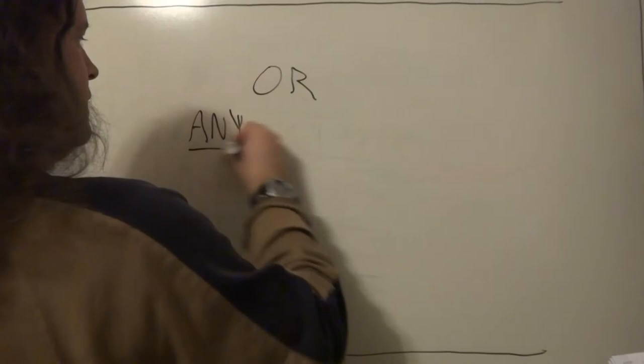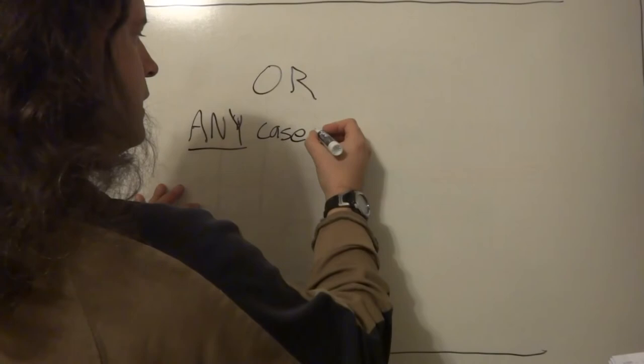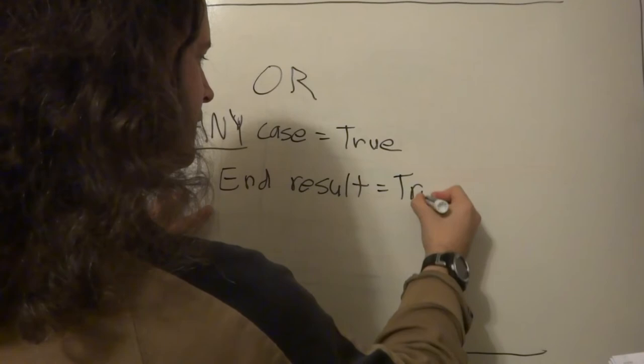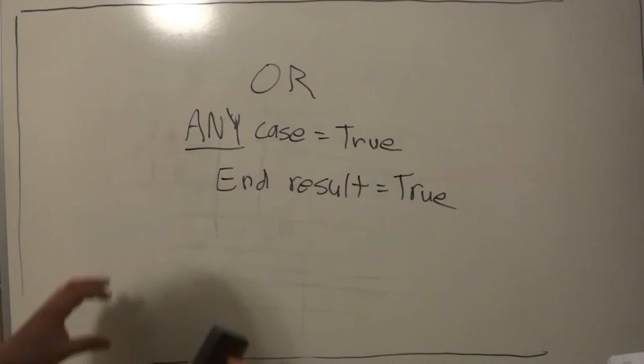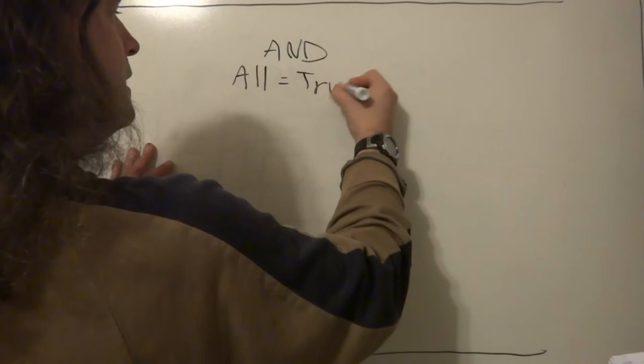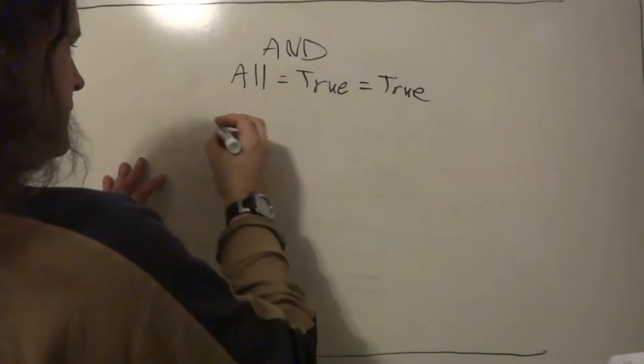It's on the land of war. Any case being true and result is true. Now, this is the exact opposite of AND logic, which I did in the other video, where I'll just go over very quickly, where all has to be true to be true. And so I'm going to do this very quickly here.